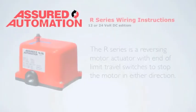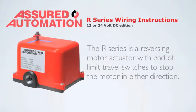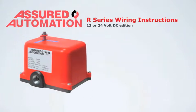This is the R-series wiring instructions, 12 or 24 volt DC edition. The R-series is a reversing motor actuator with end of limit travel switches to stop the motor in either direction.